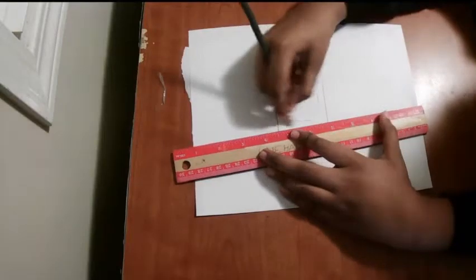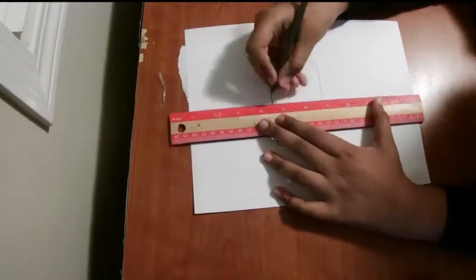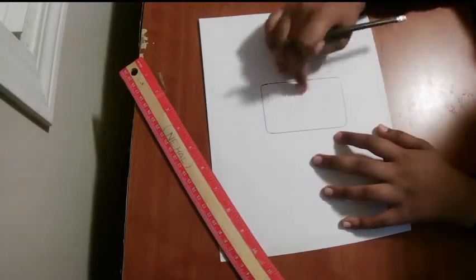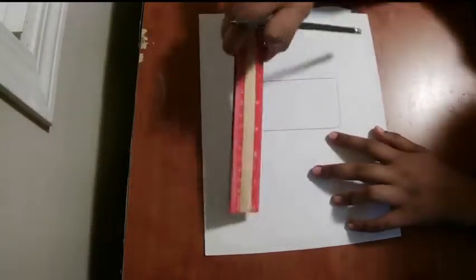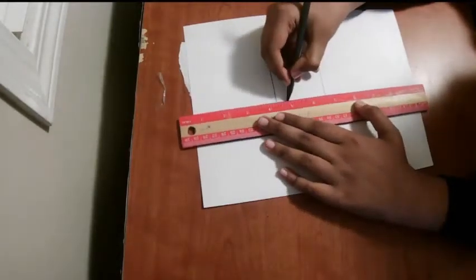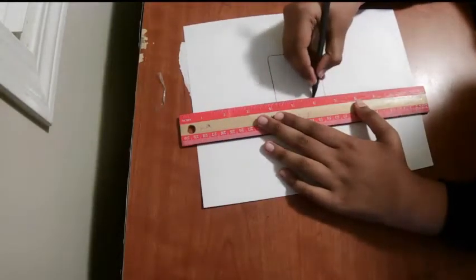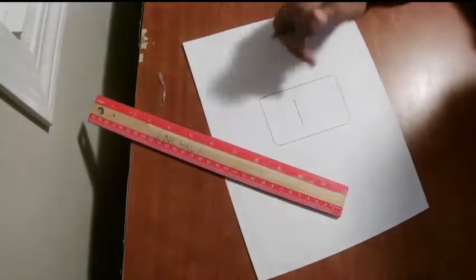So you're gonna use your ruler and make the line straight. You're gonna try finding the middle of the rectangle. If you want, you could use a ruler and find the exact middle, but I'm just gonna use my eyes and estimate the middle. So I think the middle is around here, so I'm gonna draw one line like that.